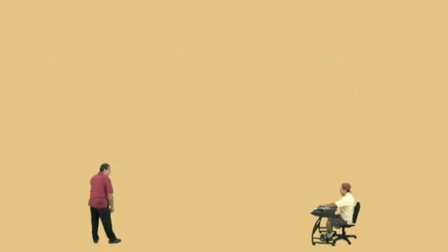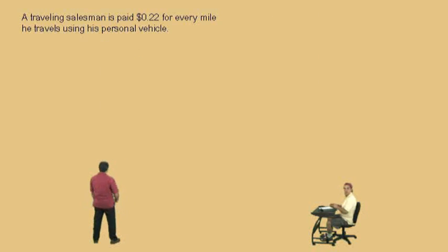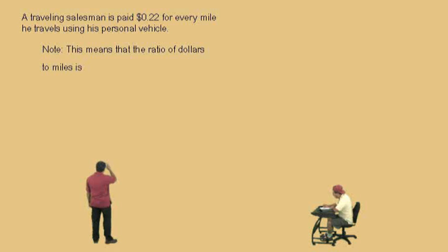All right, Charlie. Let's keep going. Here we go. A traveling salesman is paid 22 cents for every mile. He travels using his personal vehicle. Now, notice, it's a dollar sign up there, right? Dollar 0.22. That means .22 dollars, which is actually 22 cents. Same thing.